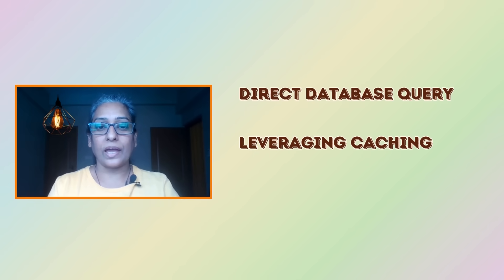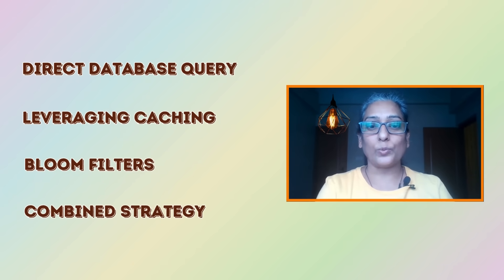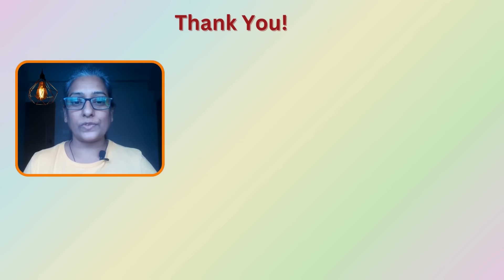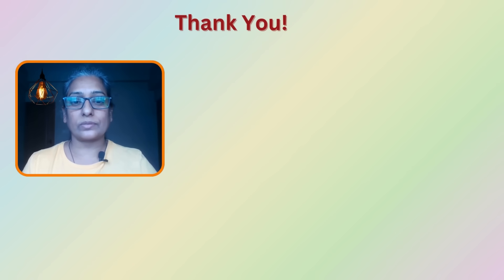So there you have it — a complete toolkit for checking if a user exists, even among billions. Start with the basics, scale up with caching, and when you are ready for the big leagues, bring in Bloom filters. The best solutions often combine multiple approaches to balance speed, accuracy and resource usage. If you found this video helpful, give us a thumbs up and subscribe to our channel for more interesting tech topics. Do check out our other videos on software performance optimization case studies, coding, system design, big data and career growth. My name is Rupa and thank you so much for watching.